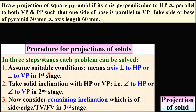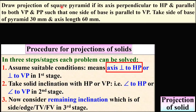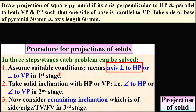In the first stage you have to assume the axis of the solid either perpendicular to HP or perpendicular to VP. Here it is given that the axis is perpendicular to HP. So we are going to assume in the first stage axis perpendicular to HP, so that you can see the true shape of the base of the square pyramid in the top view, and hence you have to start with the top view of the first stage.